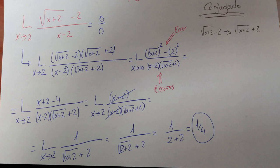Otro ejemplo donde entran en juego las raíces cuadradas: límite cuando x tiende a 2 de (√(x + 2) - 2) / (x - 2). Si sustituimos nos da 0/0. No se puede factorizar porque hay raíz cuadrada, lo que debemos hacer es multiplicar y dividir por el conjugado, que simplemente es cambiarle el signo. Una vez multiplicado, el numerador es diferencia de cuadrados: (x + 2) - 4 = x - 2. No desarrolléis el denominador, porque ahora quitamos (x - 2) con (x - 2) del denominador. Nos quedaría 1/(√(x + 2) + 2), que es 1/(√4 + 2) = 1/4, resultado final.